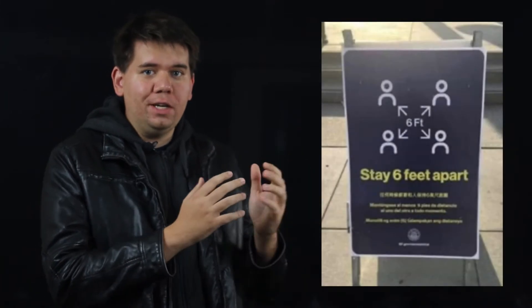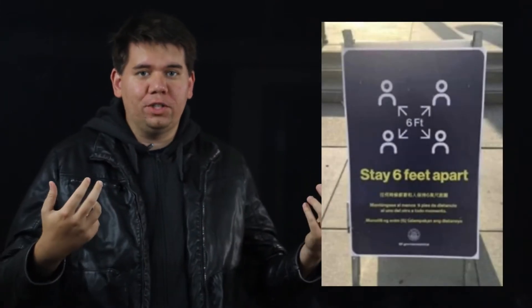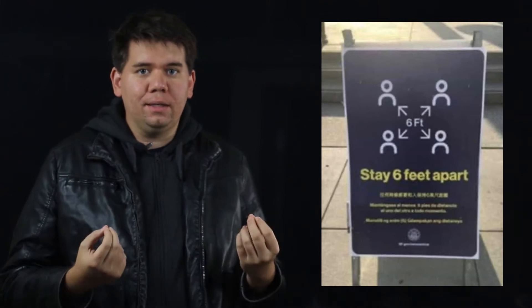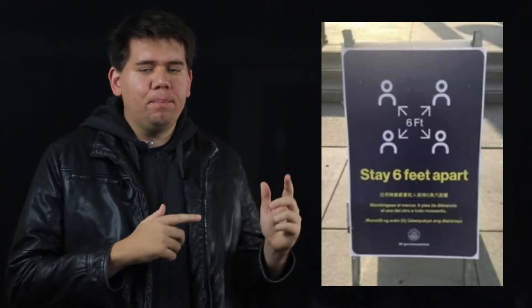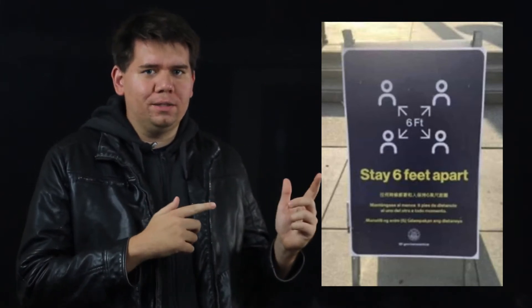What does Pythagoras have to do with pandemics? It turns out quite a bit. Recently you've been hearing a lot of talk about social distancing and you've probably been seeing signs like these encouraging us to stay six feet away from each other to prevent the spread of COVID-19. That's good advice but there's something wrong with the sign.